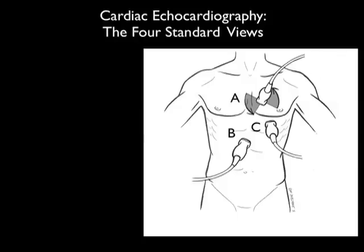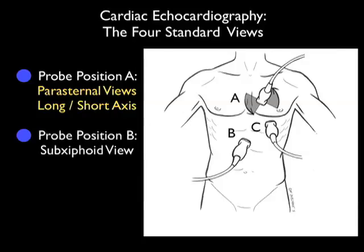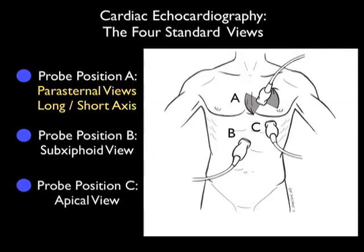Let's begin by reviewing the four standard views of the cardiac echo exam. The first view, as shown in probe position A, is the parasternal views, both long and short axis planes, performed directly on the anterior chest wall. The second view is probe position B, the subxiphoid view of the heart. The last view is probe position C, the apical view of the heart at the point of maximal impulse. This module will specifically focus on the parasternal views, specifically the long axis plane.